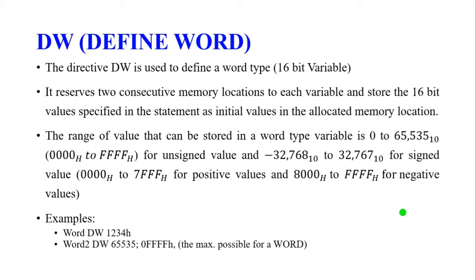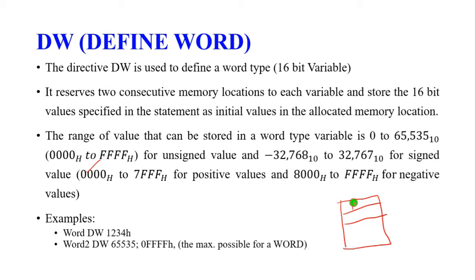The range of values stored in a word type variable is 0 to 65535 in decimal, or 0000h to FFFFh for unsigned values. For signed values, positive values range from 0000h to 7FFFh, and negative values range from 8000h to FFFFh. For example, 'WORD1 DW 1234h' reserves two memory locations — one storing 12h and the other storing 34h — and the memory location is named WORD1.